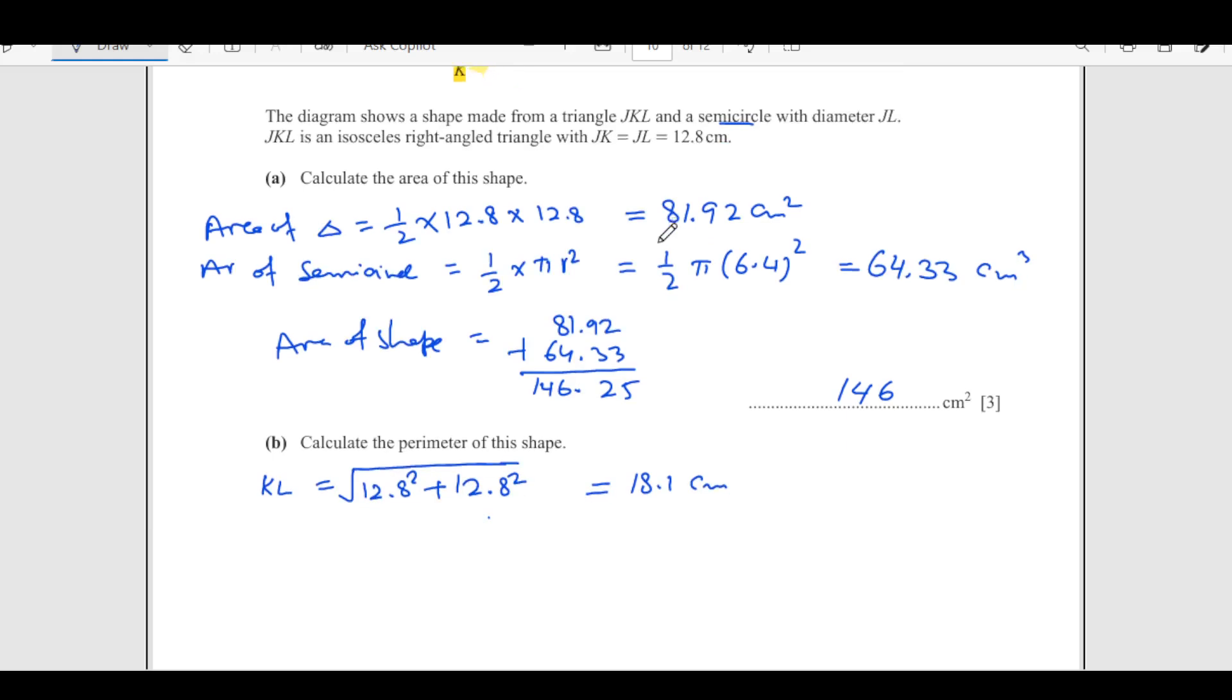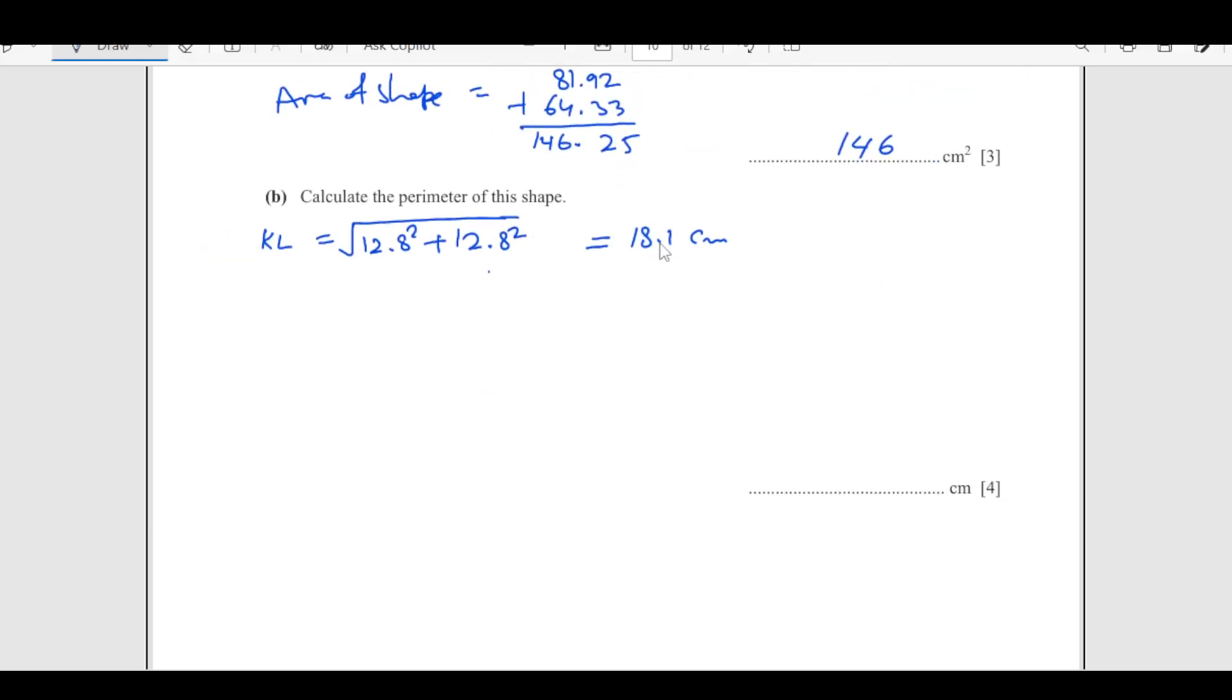Now this perimeter of the semicircle. So perimeter of the semicircle, circumference of the semicircle, circumference of semicircle is going to be half times 2 pi r. So this 2 and 2 is gone, pi r, pi times r, r is 6.4. So this comes out to be 20.1 centimeters.